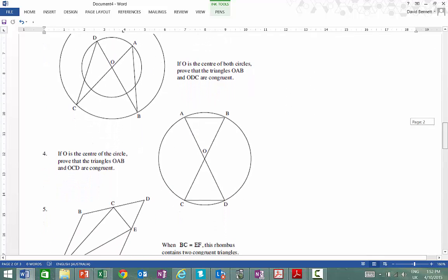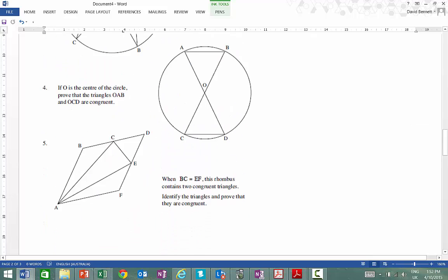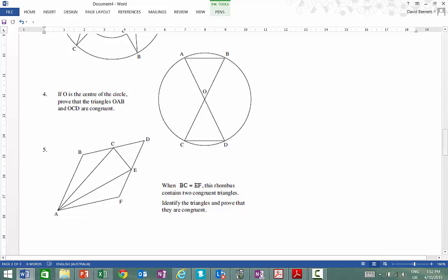So if we're doing something like, well, let's do this one here. So if O is the center of the circle, prove that the triangle OAB and OCD are congruent.